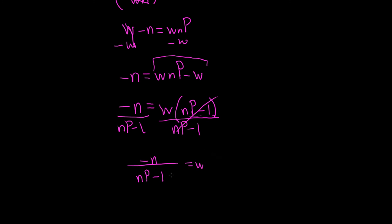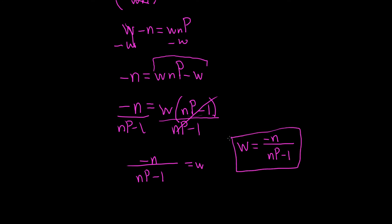You could leave your answer like this, but most people write what they're solving for on the left-hand side. So we actually have W equals negative N over NP minus 1. And that would be the final answer. I hope this video has been helpful. Thank you.